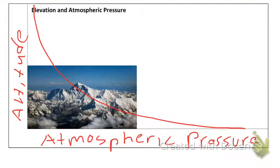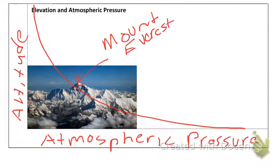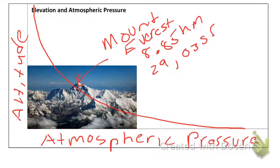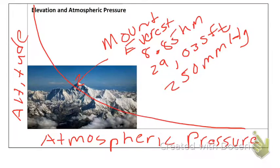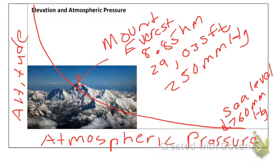We can look at this with Mount Everest, which is the tallest point on Earth at 8.85 kilometers — or 29,035 feet — above sea level. At this elevation, the barometer reads 250 millimeters of mercury, quite a bit lower than at sea level where you have a barometric pressure of 760 millimeters of mercury, which is also one atmosphere.